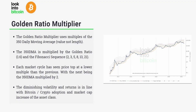To summarize: the Golden Ratio Multiplier uses multiples of the value — not the length — of the 350-day moving average. It is multiplied by the golden ratio (1.6) and the Fibonacci sequence from 2 up to 21. Each market cycle has seen price top at a lower multiple than the previous cycle. With the most recent bull cycle topping just above $60,000 at the 3x multiple, the next top may touch the 350-day moving average multiplied by 2. The indicator also maps Bitcoin's adoption growth, diminishing volatility, and maturation as an asset class.